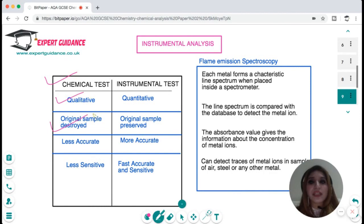In chemical tests we are destroying the original sample by mixing something to it, and this is less accurate and sensitive and it does not give any quantitative information. On the other hand, there's an instrumental analysis which is quantitative, where original sample is preserved, which is more accurate, fast and sensitive. One instrumental analysis is flame emission spectroscopy.